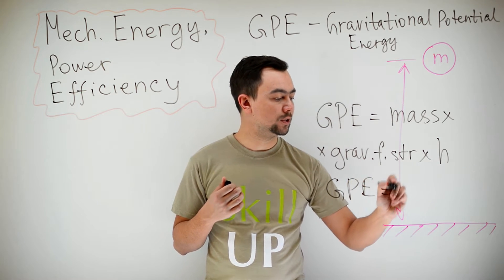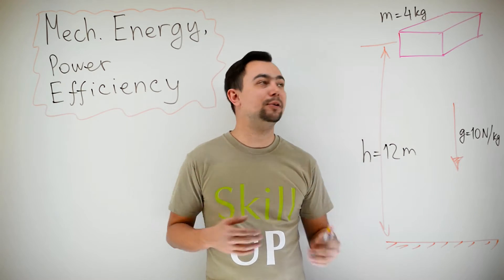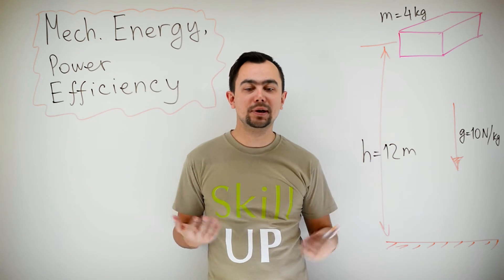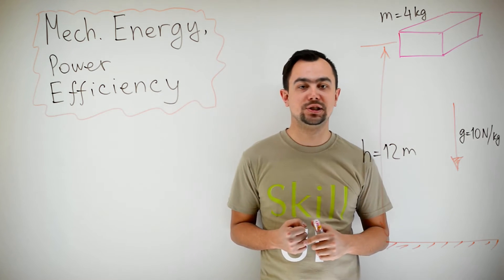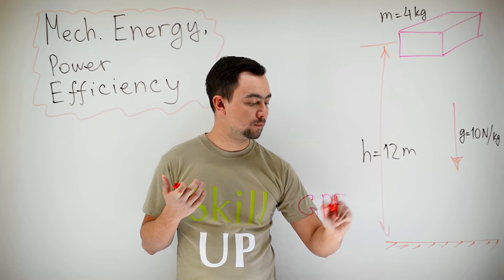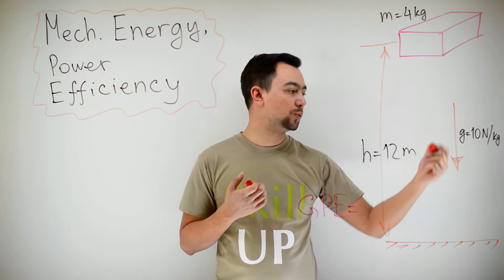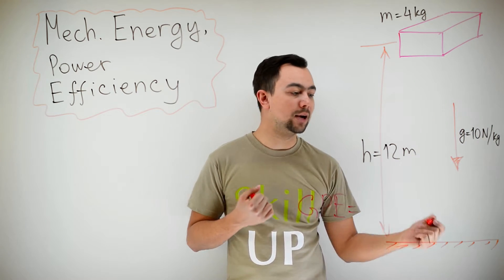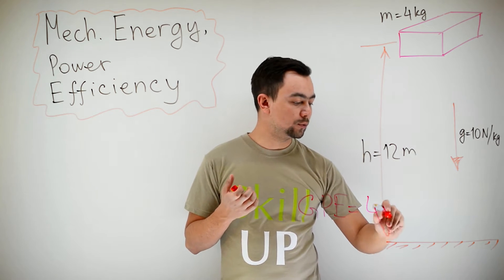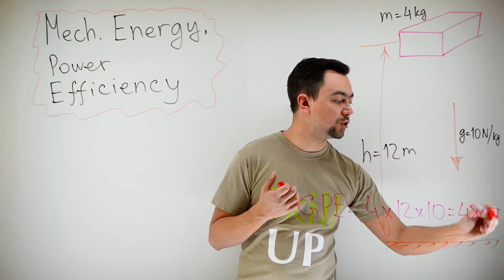GPE is equal to M times G times H. For example, a brick of mass 4 kilograms is 12 meters above the ground. How much gravitational potential energy does it have? Well, using the formula GPE equals mass times gravitational field strength, which we can take to be 10 newtons per kilogram, and H which is 12 meters. So it's 4 multiplied by 12 multiplied by 10 which gives us 480 joules.